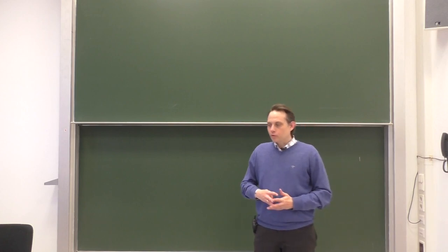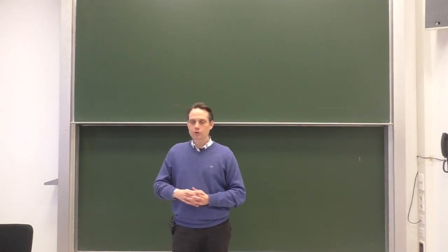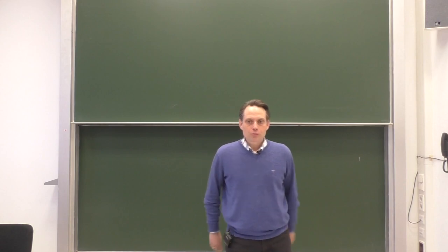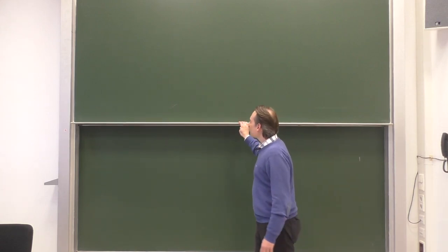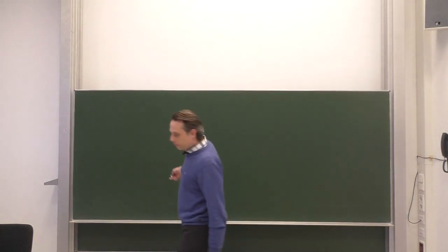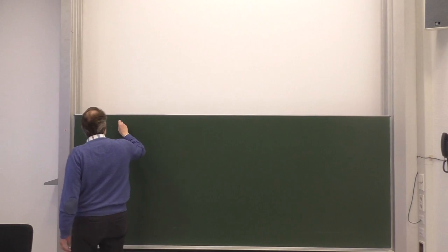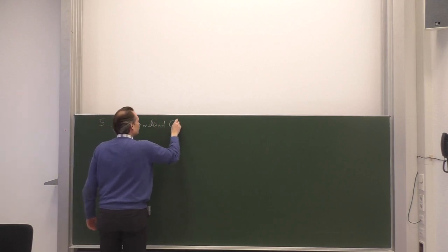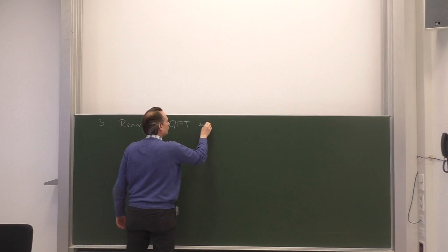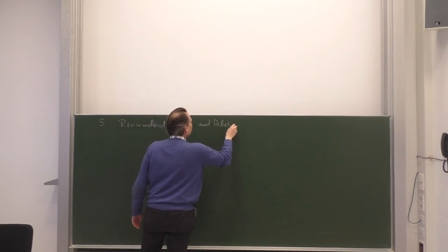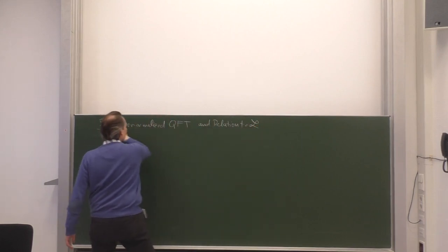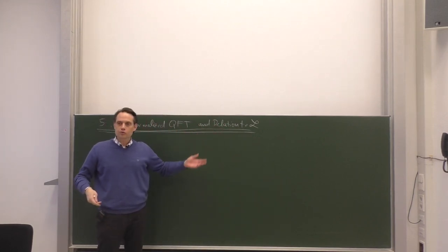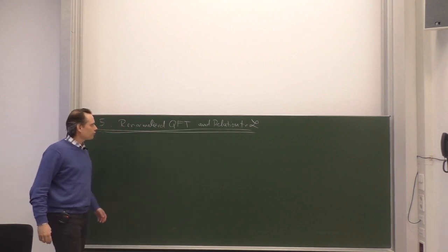So indeed, Lagrangian field theory in perturbation theory works and corresponds to this renormalized setup that we have discussed here. But the relationship to the Lagrangian was not really worked out in any detail, and that is the central point right now. So let me write down the section title. This is section five: renormalized quantum field theory and relation to Lagrangian. You might also say more precisely: relationship to the action of the theory, but that is of course essentially the same.